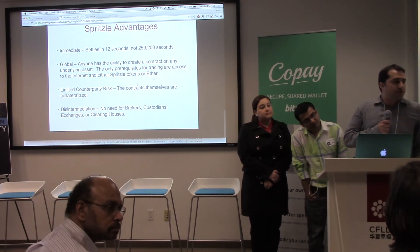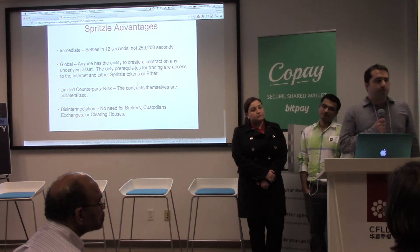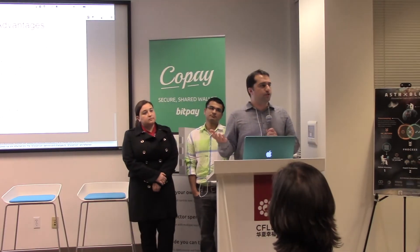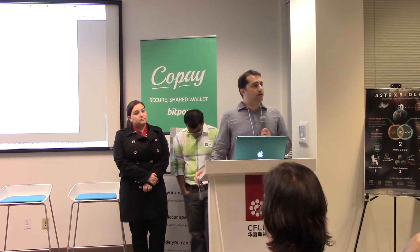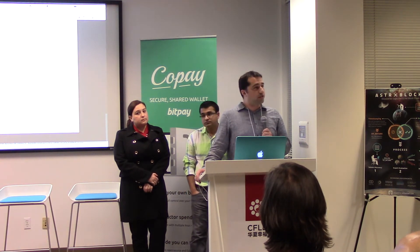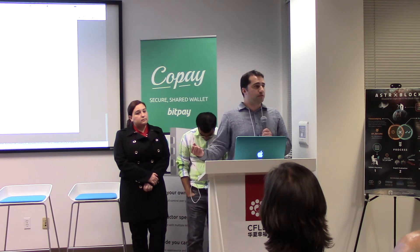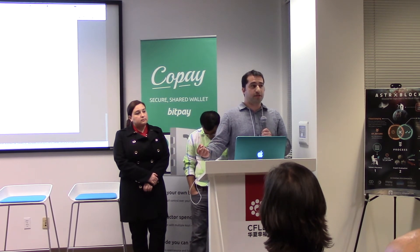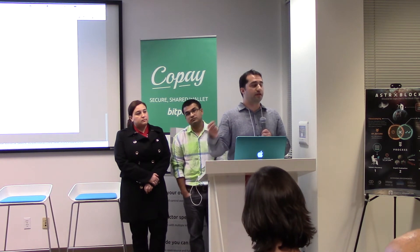What are Spritzel tokens? So one way you can trade — we showed you a trade that was settled in Ether, but you don't have to settle in Ether. You could just as well issue a token. So let's say you wanted to collateralize your contract with an underlying asset, or settle your contract in the underlying asset. One way is to have a trusted custodian that holds the actual asset. For example, you can have a trusted custodian that both parties trust that holds a share of Apple and issues a token on the blockchain. That token can then be held as collateral in the contract and can be delivered when the contract ends, just like a normal future.